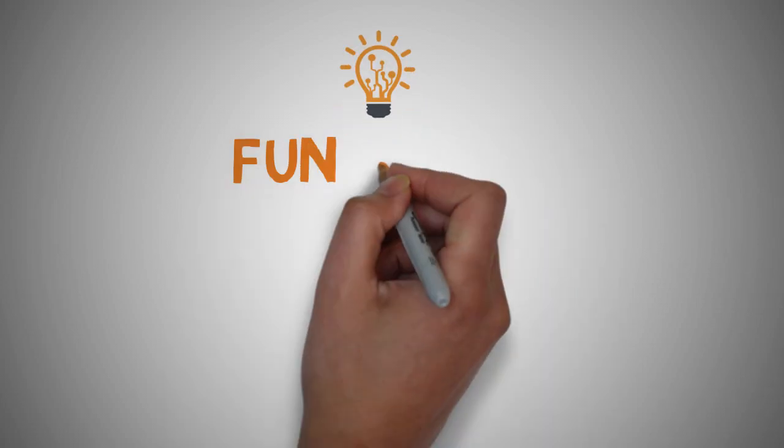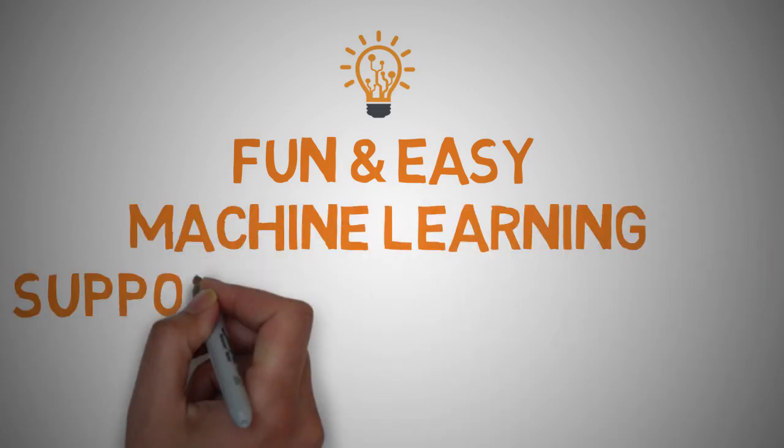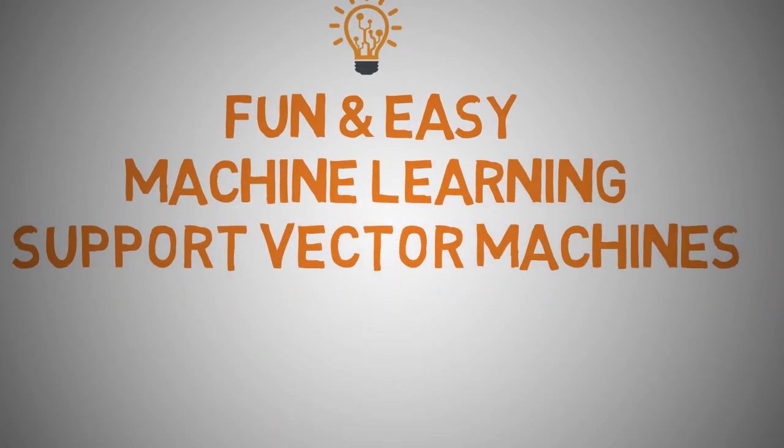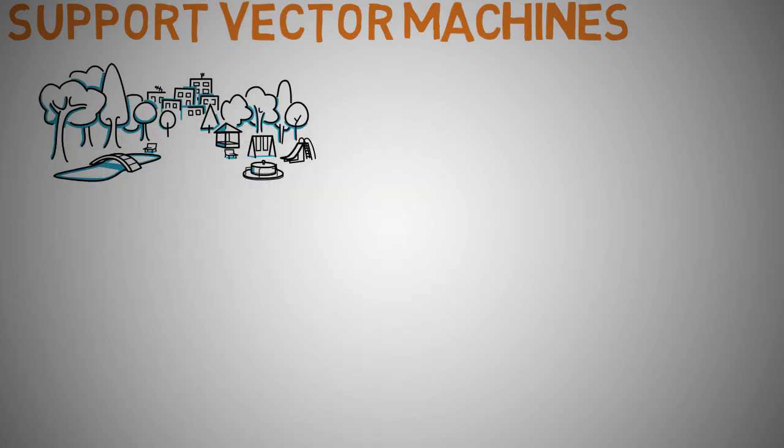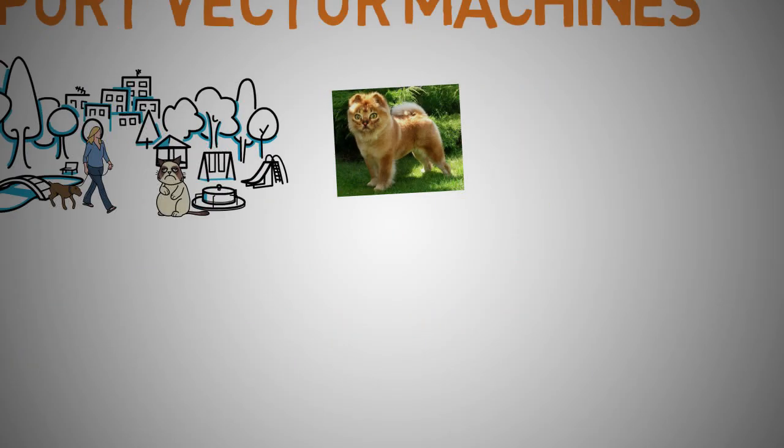Hey guys and welcome to another fun and easy machine learning video on support vector machines. The other day I was walking through the park where I saw a lot of people with their pets, dogs as well as cats, and then I came across this strange creature. It was really challenging for me to tell whether it was a dog or cat, but I eventually figured it out that it was a cat groomed like a dog.